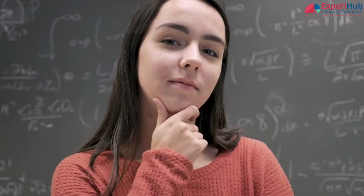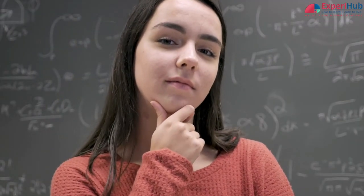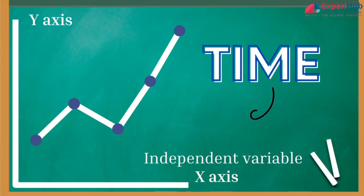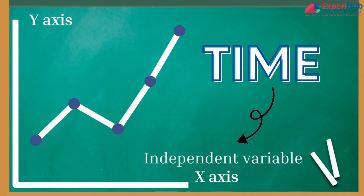Seems difficult to imagine, right? So, since time is an independent variable in all practical scenarios, it is always shown on the x-axis in all real-world problems.